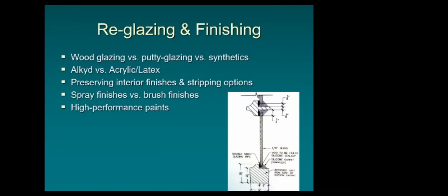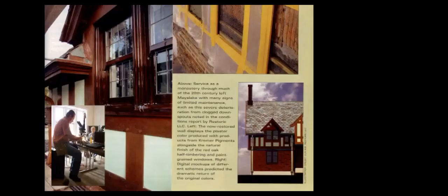Wood glazing versus putty glazing versus synthetic materials like latex, and finishing options could each require a much longer presentation. Very high-end finishes can be found on extraordinary homes. At the Maize Lake Peabody Estate, all exterior casing was pine finished with a faux dragging technique that blended with the half-timber, which was originally stained red oak.